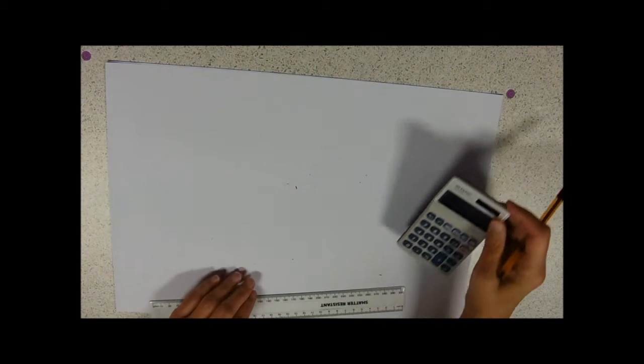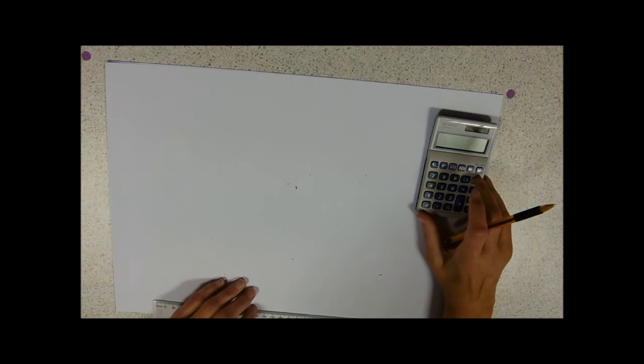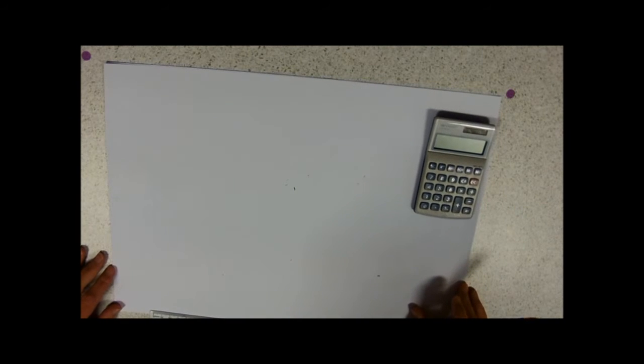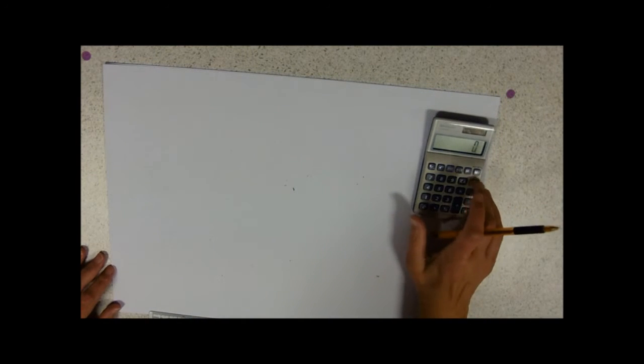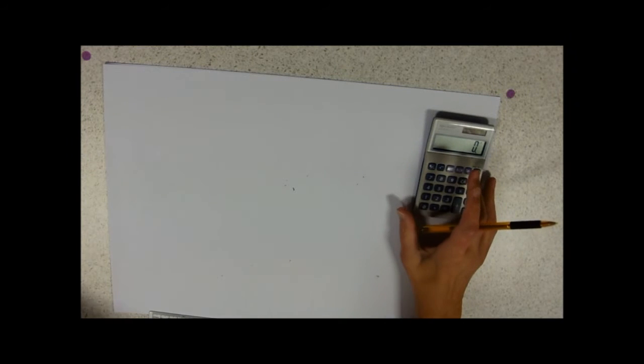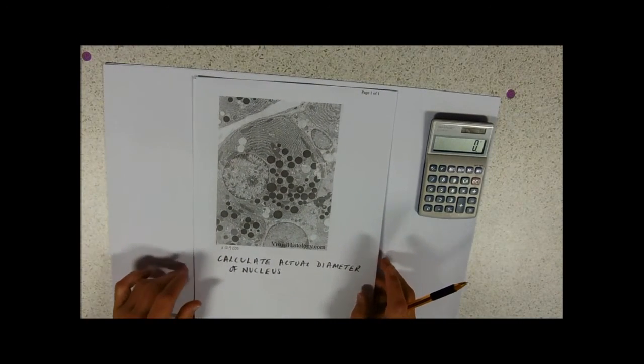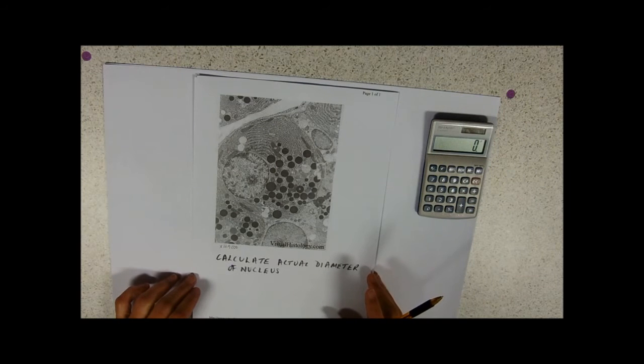Other things you'll need in your exam are a ruler, a pen, and really importantly, a calculator. You will have calculations on your paper — 10% of the marks have to be mathematically based, so you will need a calculator. I've got some examples here, and then we'll deal with a drawing of the onion cells.